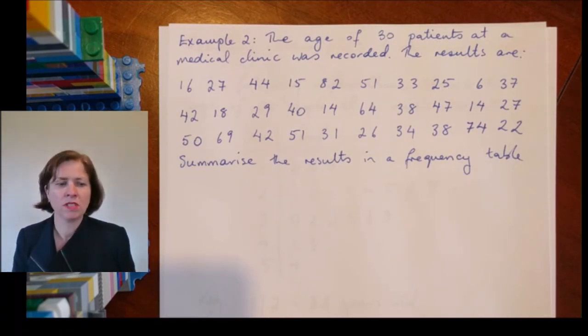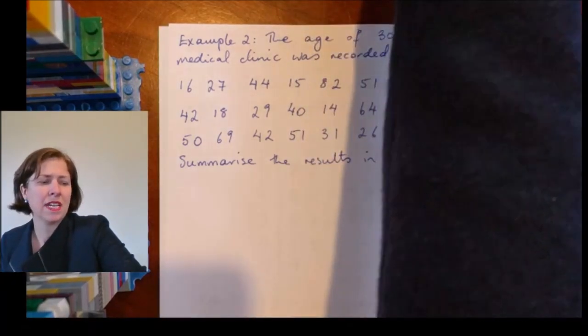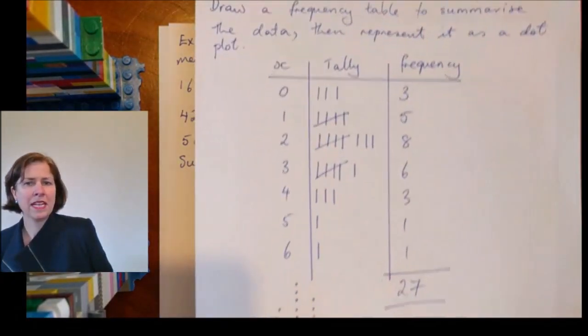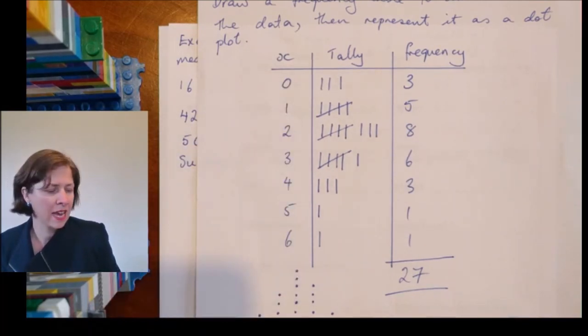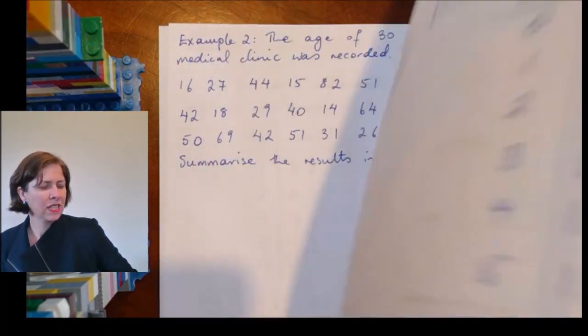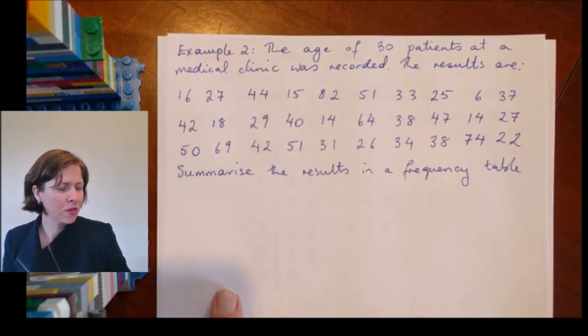In example two, the age of 30 patients at a medical clinic was recorded, and the results are here. I need to summarize the results in a frequency table. Now if you'll notice, in this table I had six categories. Sorry, actually I had seven if I count zeros. But if I look at this data, it's getting pretty spread out.